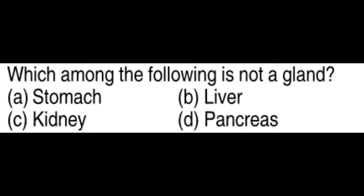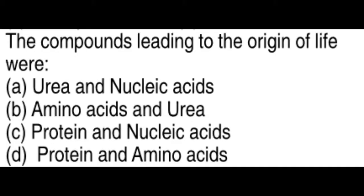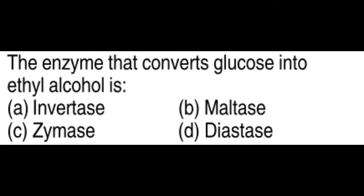Which among the following is not a gland? The stomach. The compounds leading to the origin of life are protein and nucleic acid. The enzyme that converts glucose into ethyl alcohol is invertase.